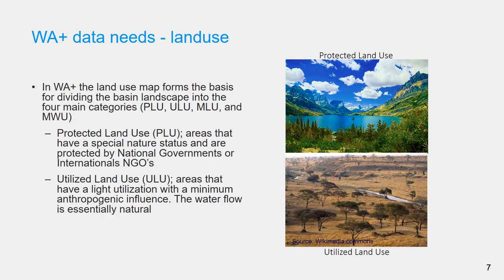In Water Accounting Plus, the land use map forms the basis for dividing the basin landscape into four main categories. These categories are protected land use, utilized land use, modified land use, and managed water use.